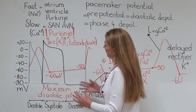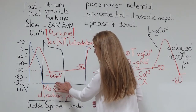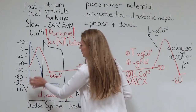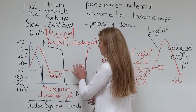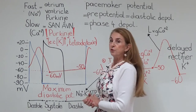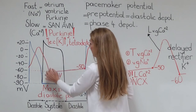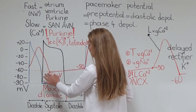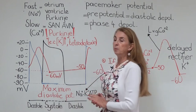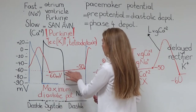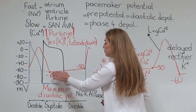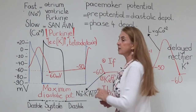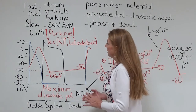Looking at these action potentials, the resting membrane potential in the atrial and ventricular muscle cells is constant, about minus 80 or minus 90 millivolts. But there is no constant resting membrane potential in the cells that produce the slow action potential. There is a maximum negative level produced on the membrane at the end of repolarization, called the maximum diastolic potential. After this, the membrane potential in these cells gradually depolarizes automatically to reach the threshold and produce a slow action potential.